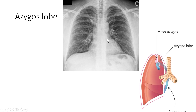What happens here is the azygos vein runs through the upper part of the lung, carrying a mesoazygos with it, demarcating the rest of the upper lobe from this part called the azygos lobe.